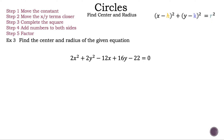Now let's move on to example 3. Find the center and radius of the given equation 2x squared plus 2y squared minus 12x plus 16y minus 22 is equal to 0. We have the standard equation of a circle on the top right: the quantity of x minus h squared plus the quantity of y minus k squared is equal to r squared, where (h, k) is the center and r is the radius. This time we have coefficients greater than 1 in front of x squared and y squared, but if we take a look, each number is a multiple of 2.